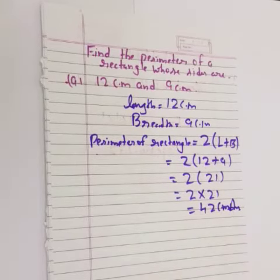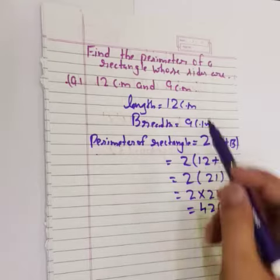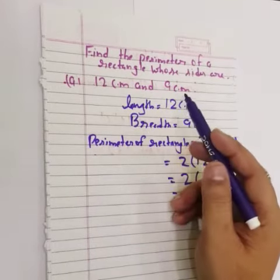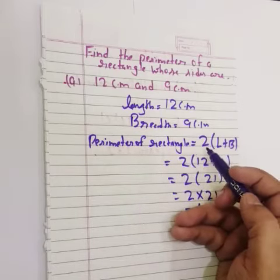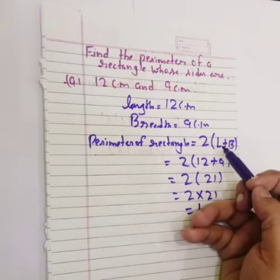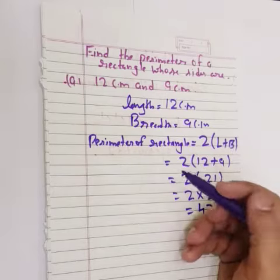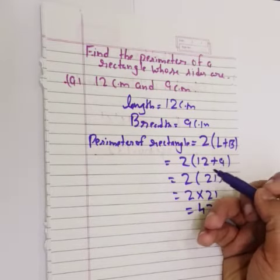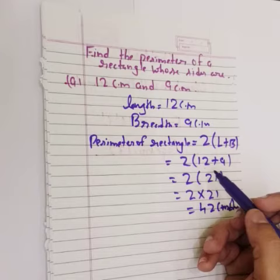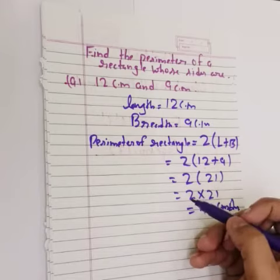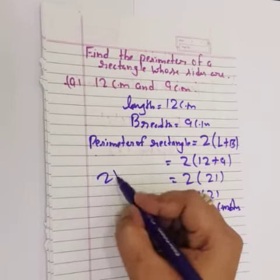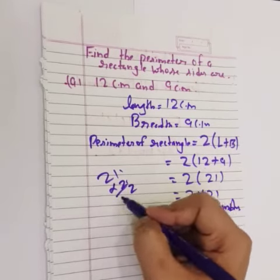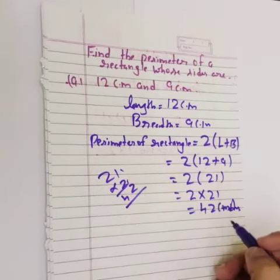To review: We needed to find the perimeter of rectangle with length 12 cm and breadth 9 cm. Perimeter of rectangle equals 2(L+B), which is 2(12+9) = 2(21) = 42 cm answer.